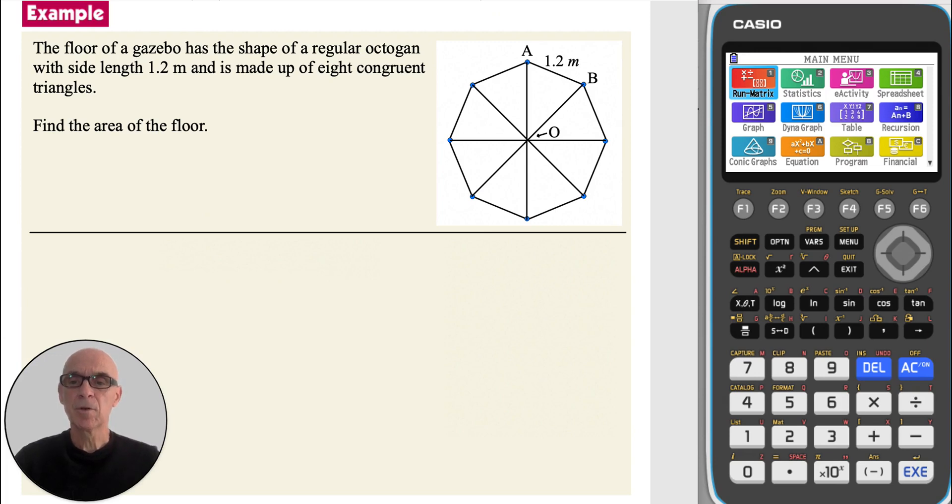In this question, we're asked to find the area of the floor of the gazebo. If we begin by finding angle AOB, and since the eight triangles are congruent, that angle is equal to 45 degrees, as shown.